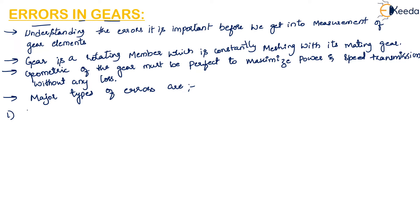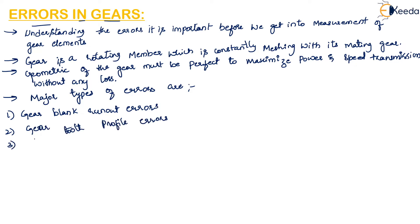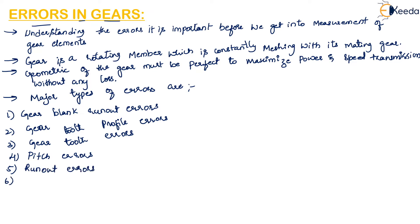The seven types of errors are: first, gear blank runout error; second, gear tooth profile errors; third, gear tooth errors; fourth, pitch errors; fifth, runout errors; sixth, lead errors; and seventh, assembly errors.